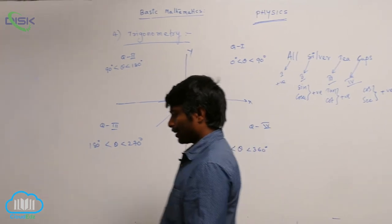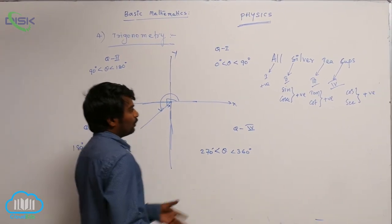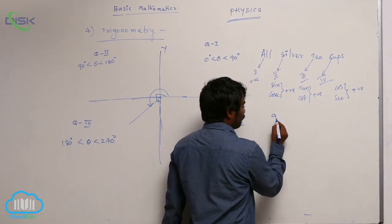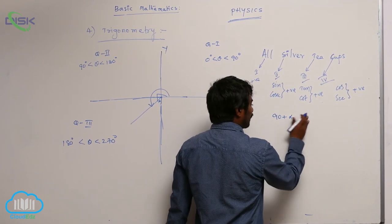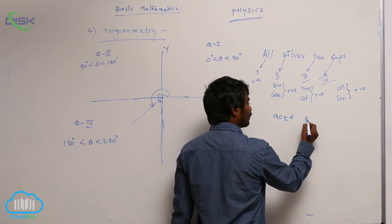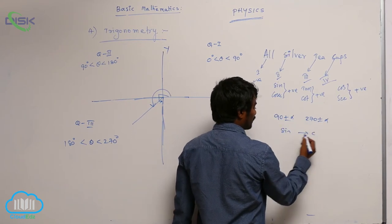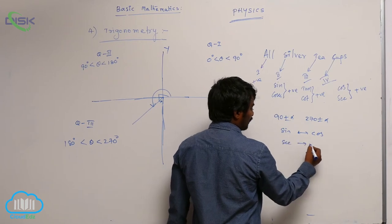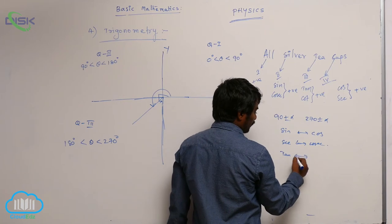How are we going to do these operations? Before this, one more thing. If it is 90 plus or minus alpha or 270 plus or minus alpha, sin will become cos, secant will be cosecant, and tan will be cot.